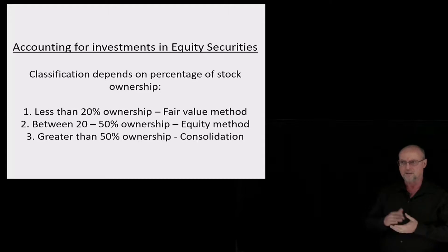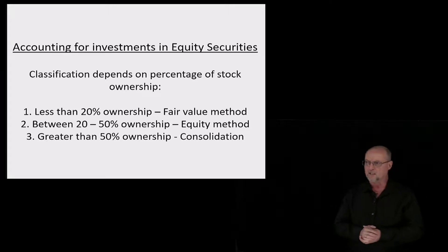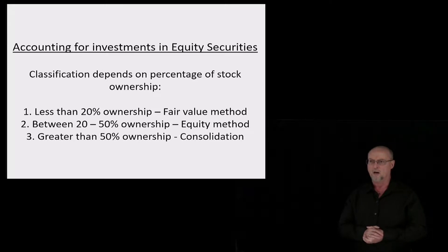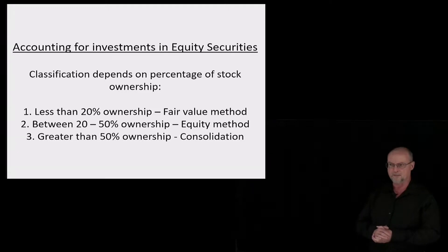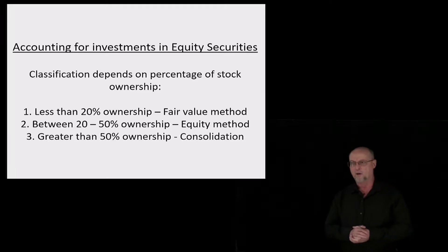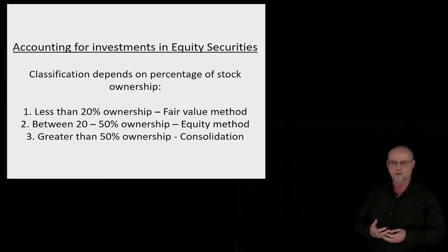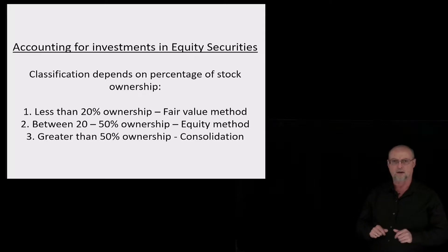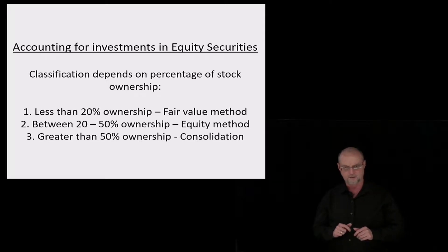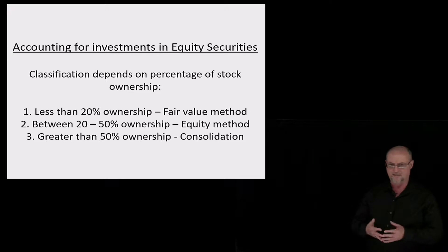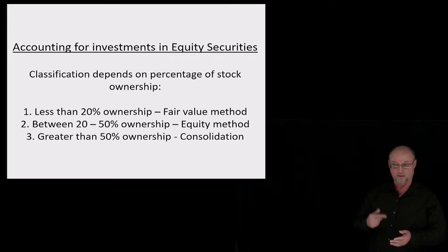We have three classifications. If we own less than 20% of a company's stock, we're going to account for the investment under the fair value method. When we own between 20% and 50% of their stock, we use something called the equity method. And when we own more than 50% of a company's stock, we control the company — we would use consolidation accounting. We are not going to talk about consolidation accounting in this video; that's an entire class in advanced accounting. But we will look at the first two methods.